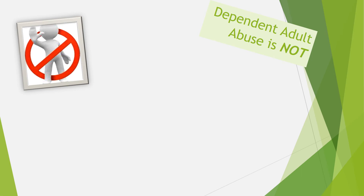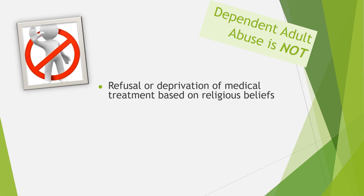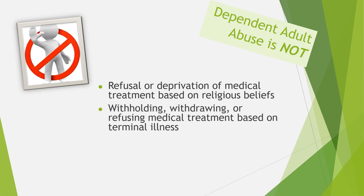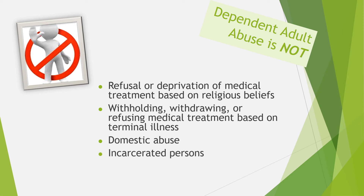There are some situations which may appear to be dependent adult abuse, but according to the Iowa Code, they do not apply. First, refusal or deprivation of medical treatment based on religious beliefs — the practices of some religions call for reliance on spiritual means for healing. Second, withholding, withdrawing, or refusing medical treatment based on terminal illness, when this is based upon the request of the dependent adult, their next of kin, power of attorney, or guardian. Third, domestic abuse in situations where the victim is not dependent as defined under the law. Fourth, persons incarcerated or jailed in a penal setting — while one can make a case that a jailed person is a dependent adult, the code excludes these persons from the dependent adult abuse law.